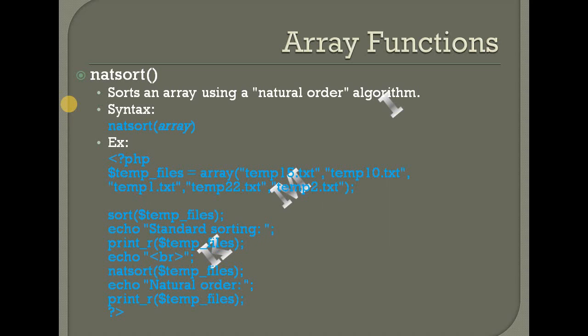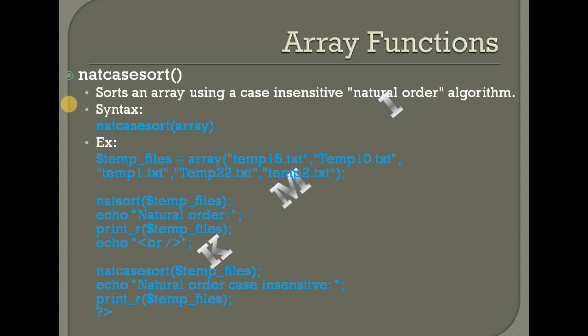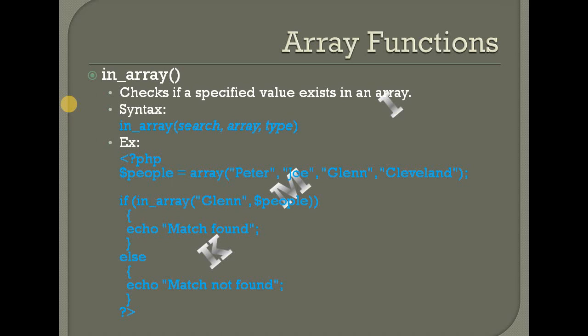Natsort — sort an array using natural order algorithm, case insensitive. In_array — check if a specified value exists in an array. Glen value — check match found.